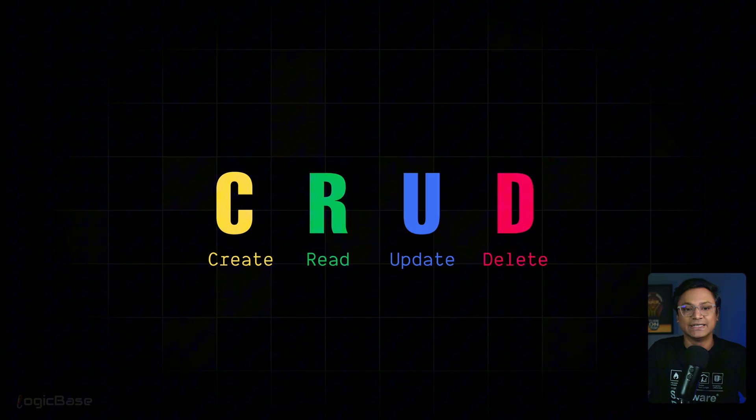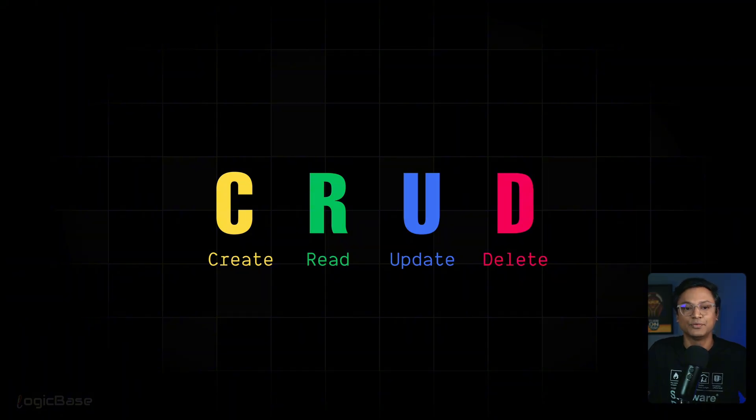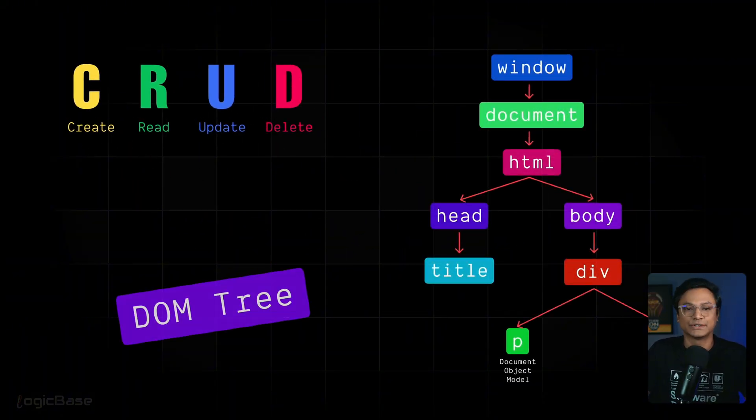What happens is JavaScript reads the HTML we have written and creates a tree model inside the browser. That's called the DOM tree. Each element exists as an object and we can perform CRUD operations on these objects. Makes sense, right?